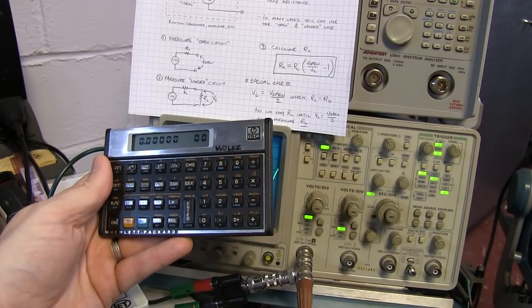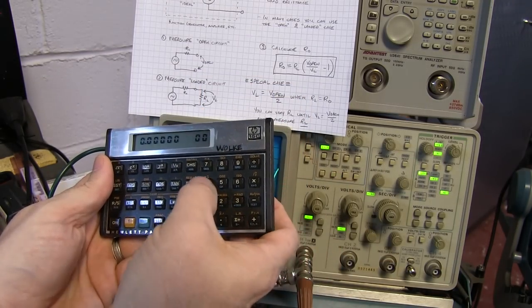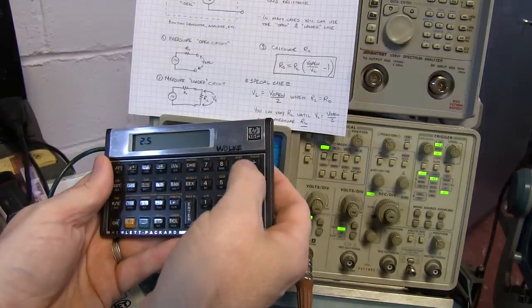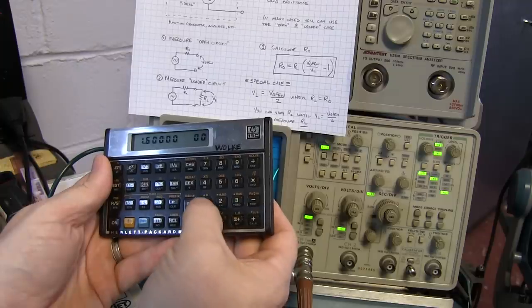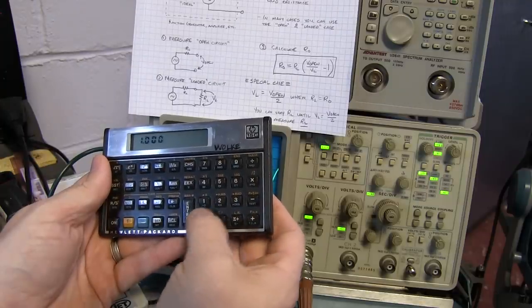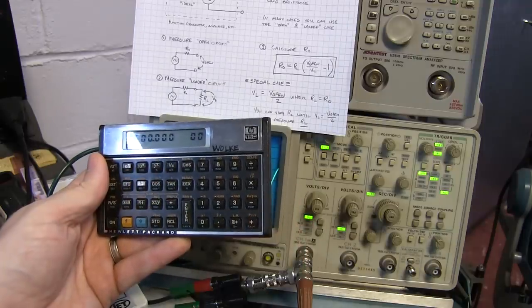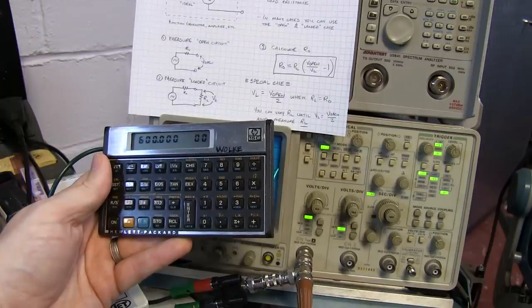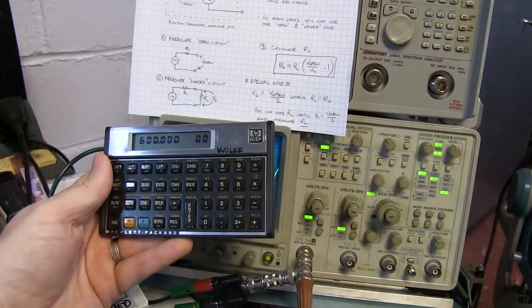Okay so let's calculate our output impedance. Our open circuit voltage was four volts, you divide that by our loaded voltage of two and a half volts, subtract one from that, and multiply our thousand ohm load resistance, then we wind up with 600 ohms.